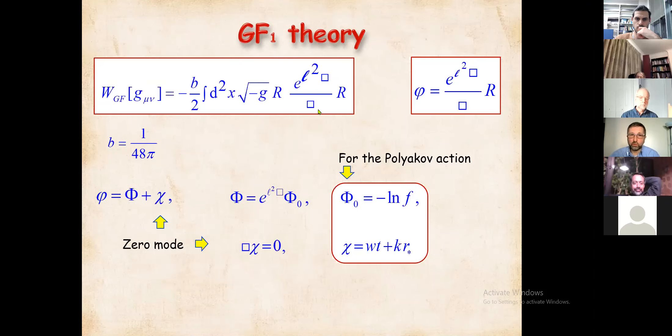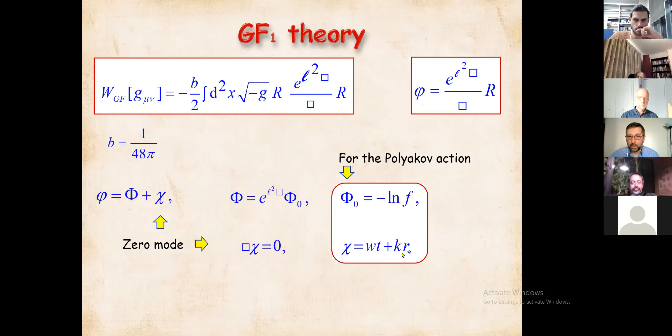We consider this form of the Polyakov action with n equals one for static sheet problems, where we do not encounter any instabilities. Our auxiliary field has this form, and the solution can be split into two parts: one responsible for the non-homogeneous part, and the zero modes. The zero modes satisfy the same equation as in the pure local Polyakov case — but there is a difference between the non-local φ and the local φ₀.